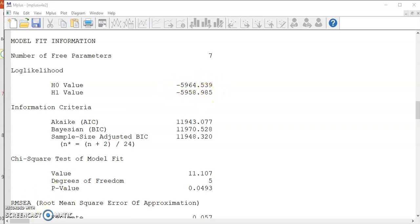For the three information criteria numbers, there are no guidelines. So they are used for comparing competing models. Models with smaller values on those AIC, BIC, adjusted BICs are considered as fitting the data better.